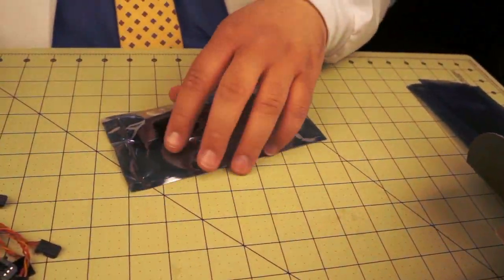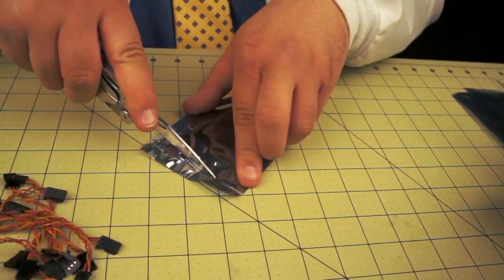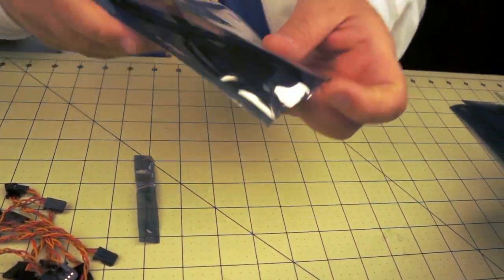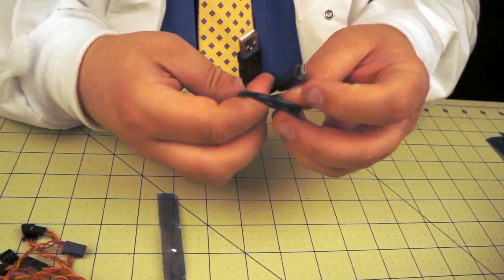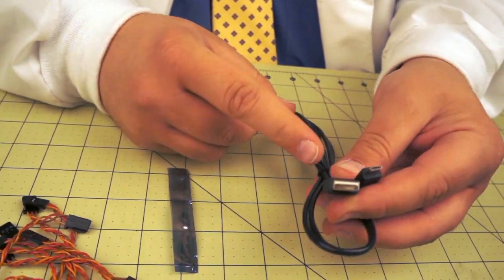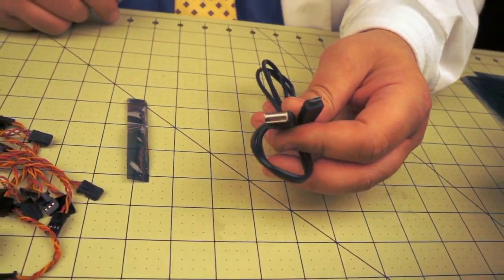Last, we have a standard USB A to mini, or micro B I should say. A to micro B. You can use it to charge yourself when you're not using it for this. But this allows you to program the unit.